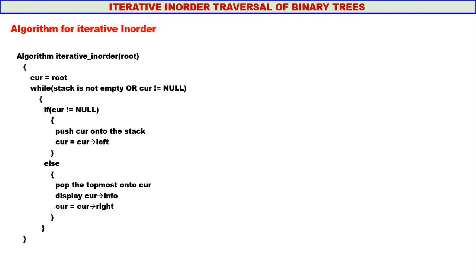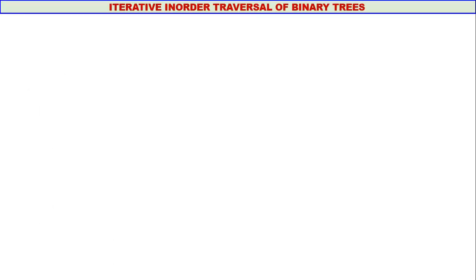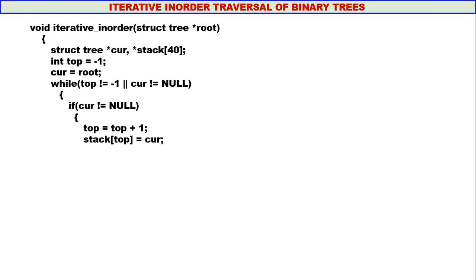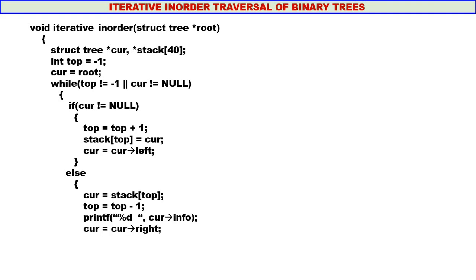The C function for iterative inorder: stack of 40 and top is minus 1. Curry equals root. While top not equal to minus 1 — meaning stack is not empty — or curry not equal to null: if curry is not equal to null, push curry onto the stack and curry moves to the left. Otherwise, pop to curry the topmost element, display curry info, and curry moves to the right. The algorithm and function for iterative inorder traversal is quite simple and straightforward.